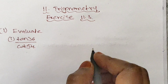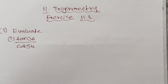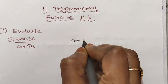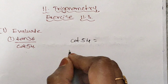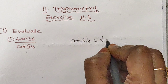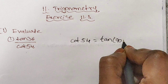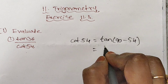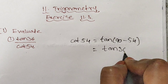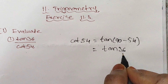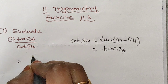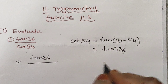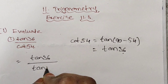You know the trigonometry ratios of complementary angles. So, change cot 54: cot 54 is equal to tan(90 minus 54). Tan(90 minus 54) is tan 36. So cot 54 is equal to tan 36. Therefore, tan 36 divided by cot 54 is also tan 36 divided by tan 36.